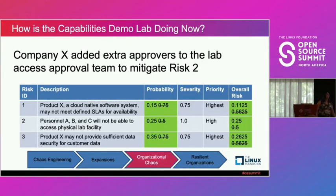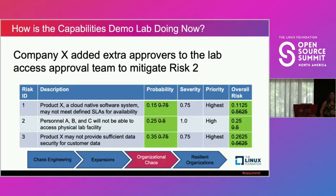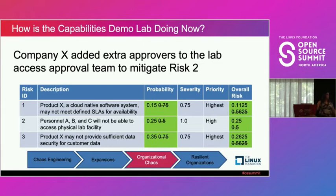Company X ran these process experiments and identified roadblocks — because everybody has roadblocks in their processes. One big roadblock was a single point of failure in the approval chain. Several key steps in the visitor approval process had only one approver assigned with no backups. In one case, a backup had originally been added but moved to a different role and was removed from the system. Because a backup had once been in place, no one thought to replace it, and it became a single point of failure. Company X's steps: identify those key steps with just one person tied to them and add backup approvers to ensure the process continues even when that person is unavailable.